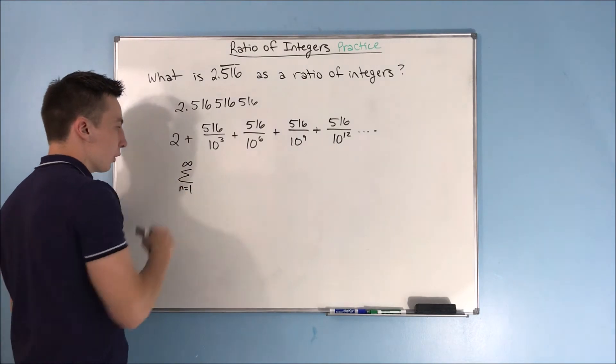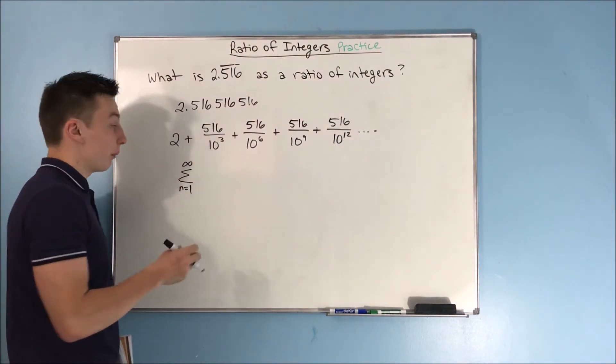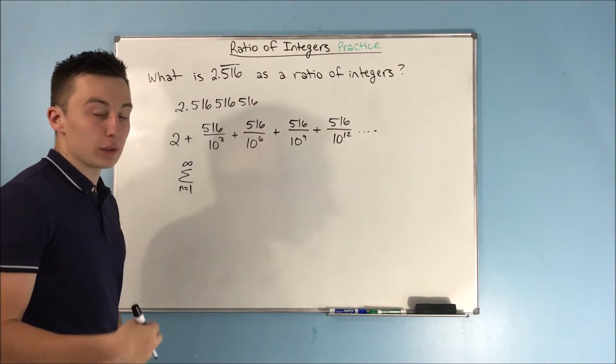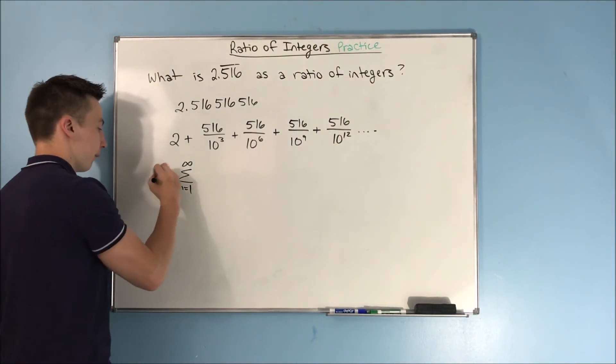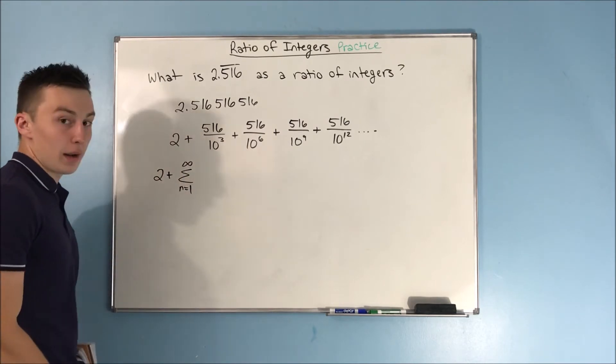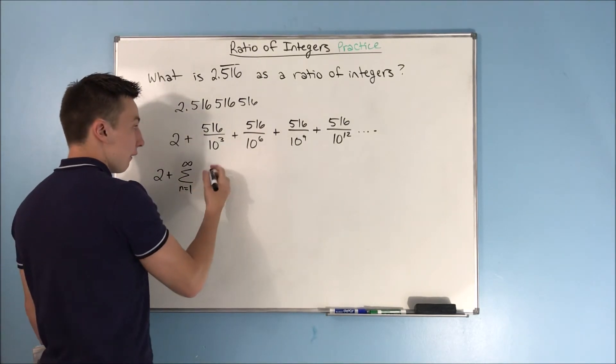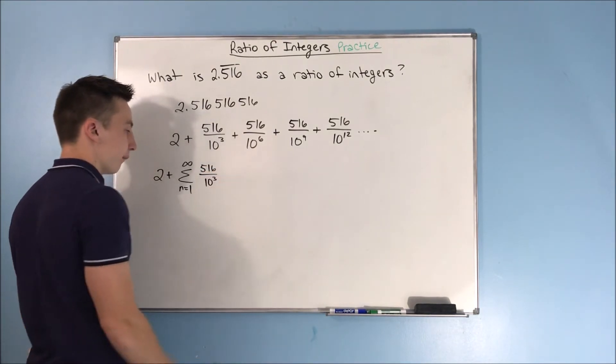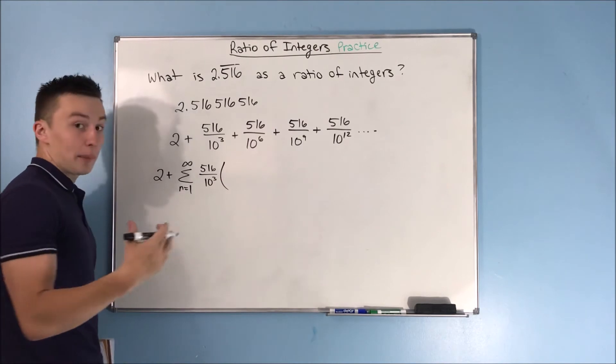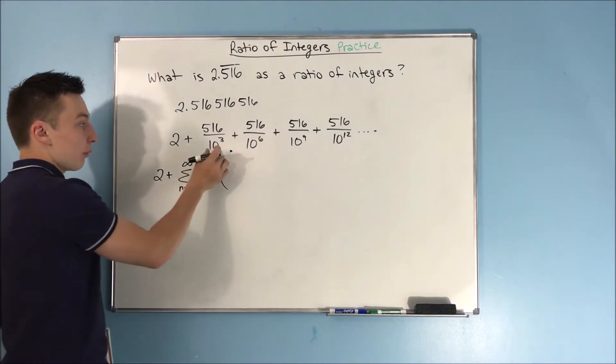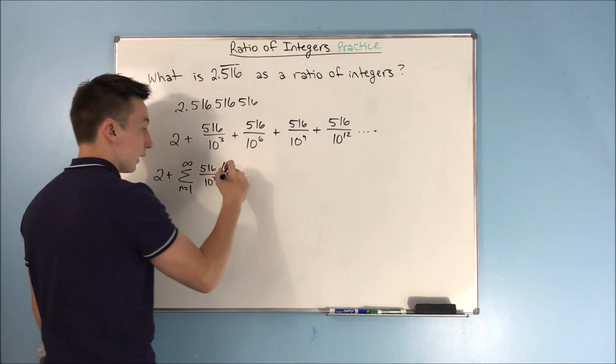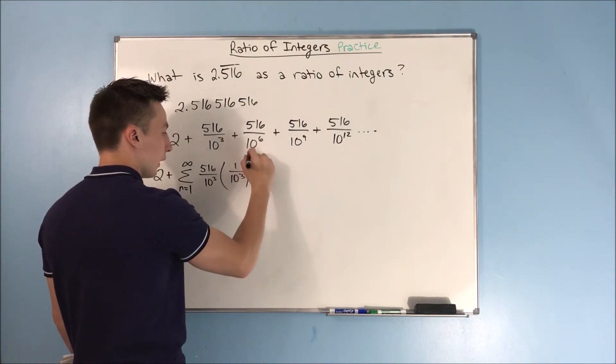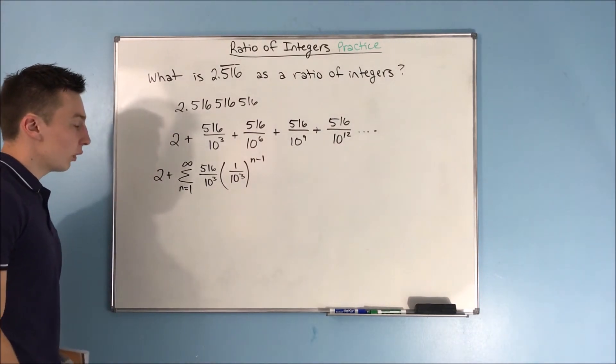We have the sum from n equals 1 to infinity of our, what's our first term? Our first term is not going to be 2. 2 is not part of this infinite geometric series. 2 has to go on the outside. Now, what's going to be that first term? Well, that's going to be 516 over 10 to the third, and that's going to be multiplied by our common ratio. And how do we get from this term to this term? We multiply by 1 over 10 cubed. And, of course, our r gets raised to the n minus 1 power.